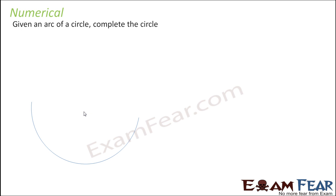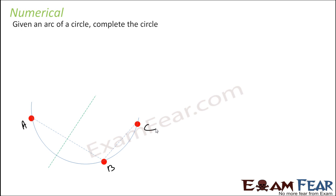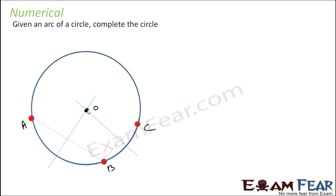Let us take a numerical example. We have been given an arc and we have to complete a circle. What we can do is take three points on this arc. Now we have three points and we know how to draw a circle with three points — we can apply the same logic. So if we are given an arc, just plot three points on the arc, join points a, b and b, c, draw the perpendicular bisector of ab and bc, let them meet at point O, and draw a circle from O with OA, OB, or OC as the radius.